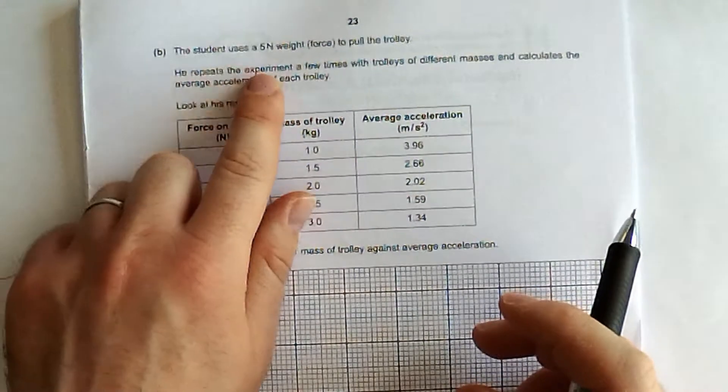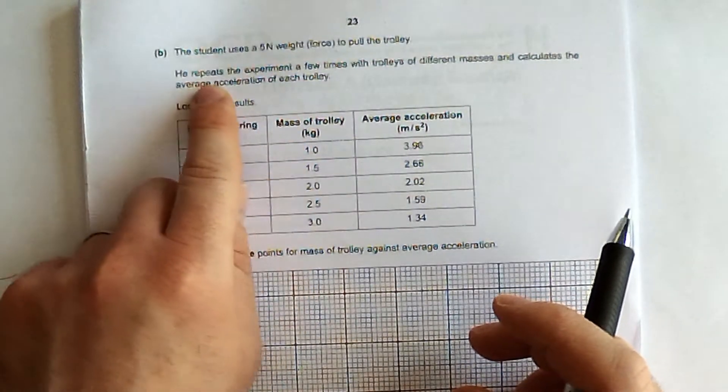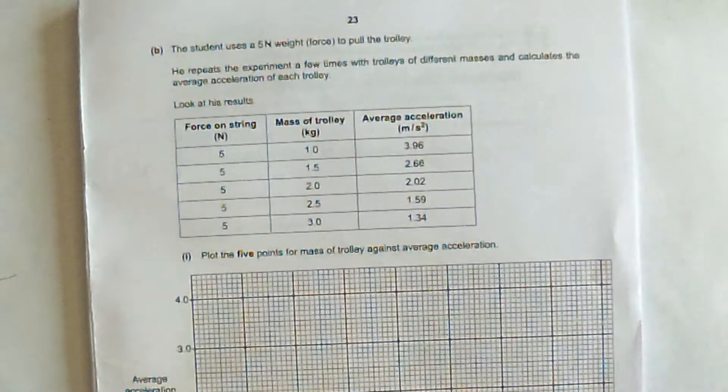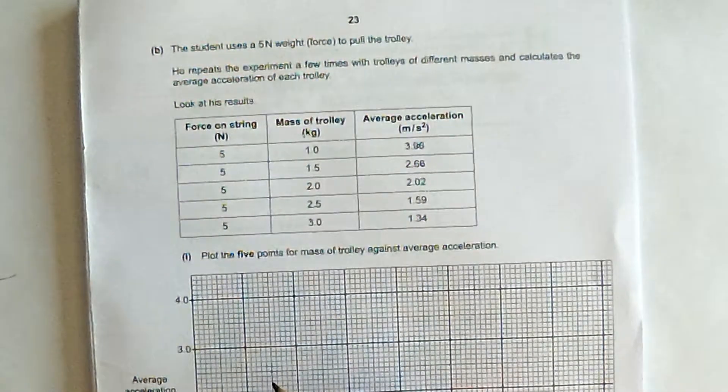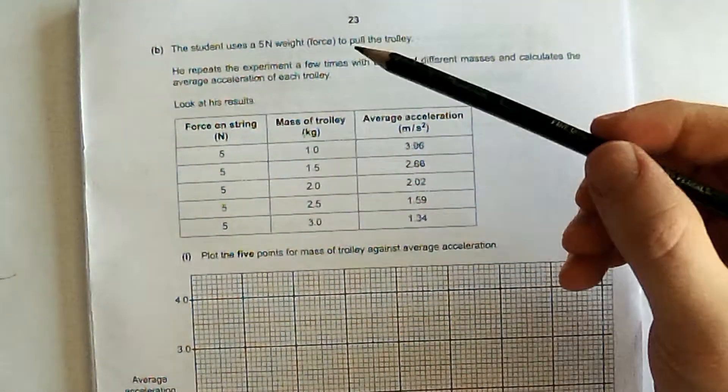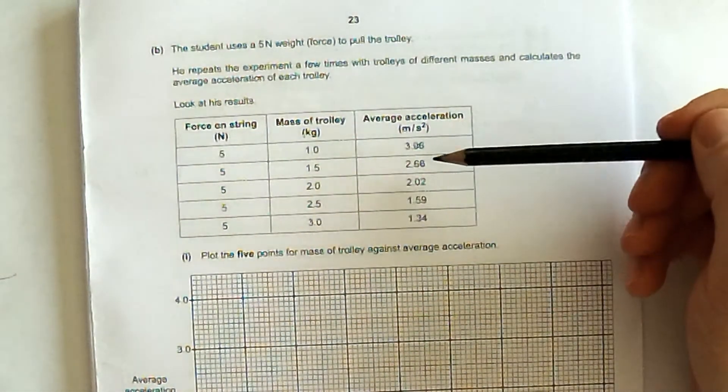So a student uses a five-newton weight or force to pull the trolley. He repeats experiments a few times with trolleys of different masses and calculates the average acceleration of each trolley. Look at his results. There's the force on the string. We don't need to plot those, though. There's the mass of the trolley. There's the average acceleration.